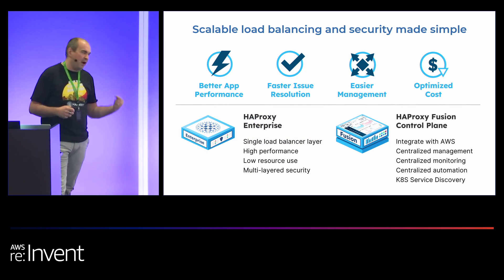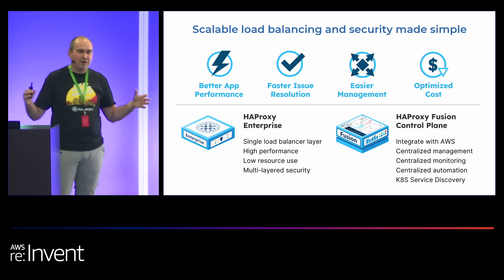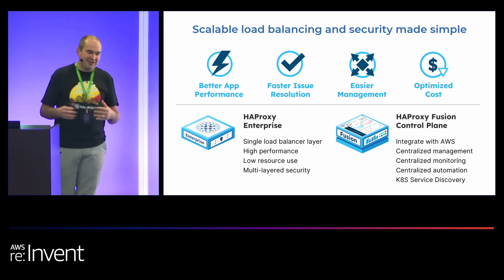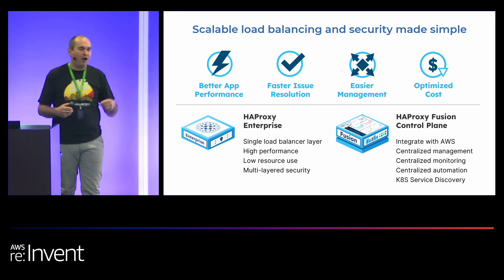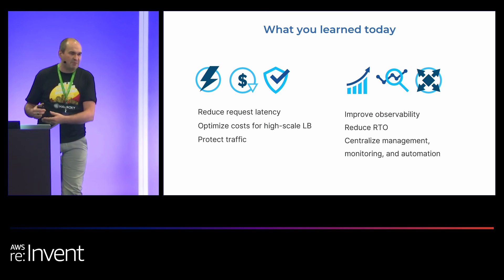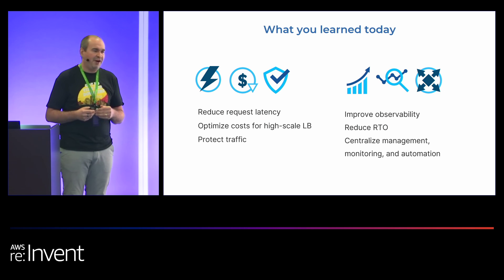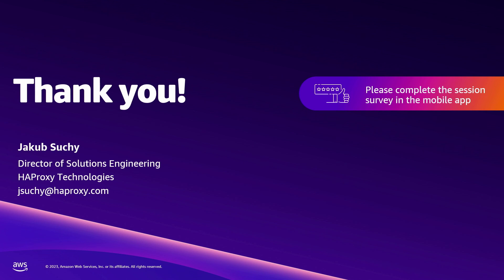To recap: we talked about using HAProxy as a load balancer to get better app performance by reducing the amount of hops, using a faster load balancer, simplifying the management, optimizing observability of the load balancing layer, reducing latency of requests, reducing recovery time objective if something fails, and centralizing all load balancing management. Thank you so much for coming today. We're at booth 251, I'm happy to answer any questions, and I have T-shirts for those of you already using HAProxy. Please also complete the session survey in the app.